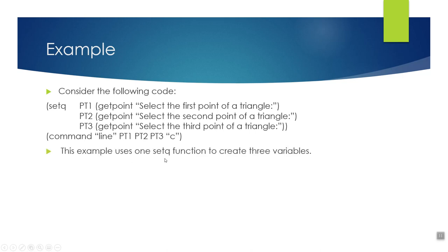You'll see there's one setQ function, but there are three variables it's creating. When you use setQ, your arguments have to come in pairs. The pairs here are pt1 and then the point, pt2 and the second point, pt3 and the third point. So rather than having to type setQ over and over again, I can just do it once and create all of my variables.